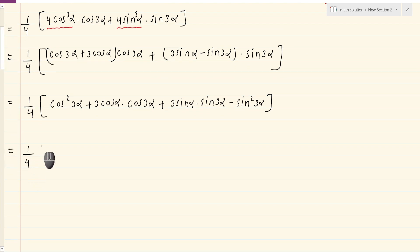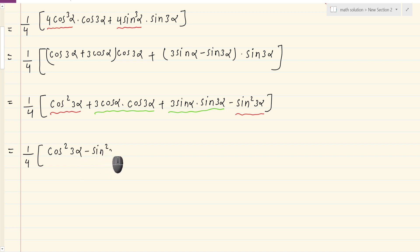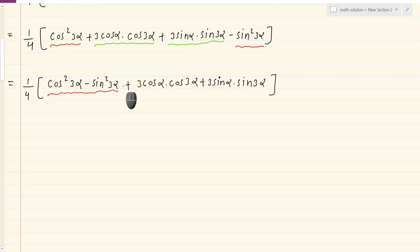Equals to 1 by 4. Now I am going to underline cos square 3 alpha and sin square 3 alpha. The formula is cos 2 theta equals cos square theta minus sin square theta. So cos square 3 alpha minus sin square 3 alpha gives cos 6 alpha. Plus 3 times cos alpha dot cos 3 alpha plus sin alpha dot sin 3 alpha remains.